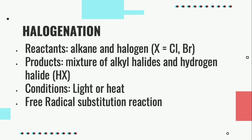Reactions of alkanes. Alkanes undergo halogenation reaction. Halogenation is the replacement of one or more hydrogen atoms in an organic compound by a halogen. Alkane reacts with halogen to produce a mixture of alkyl halides and hydrogen halide. This reaction is possible in the presence of light or heat.